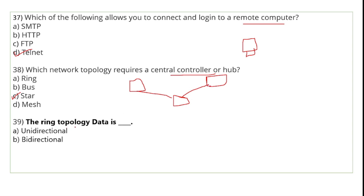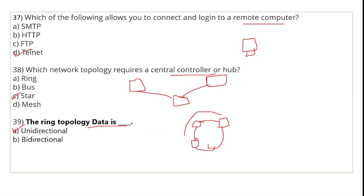In ring topology, data is unidirectional — it travels in only one direction around the ring.